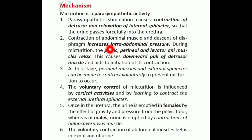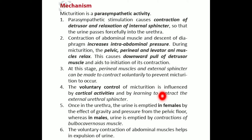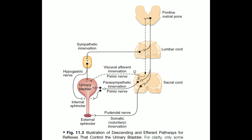Contraction of abdominal muscles and descent of the diaphragm increases intra-abdominal pressure. During micturition, the perineal, levator ani muscles relax, causing a downward pull of the detrusor. The external sphincter can be contracted voluntarily to prevent micturition. In females, urine is emptied by gravity and pelvic floor pressure; in males, by contraction of the bulbocavernosus muscles.